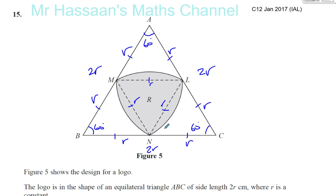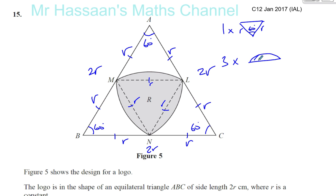We're going to find the area of this shaded part. We have one inner equilateral triangle LMN with sides R and angles 60 degrees, and we have three circular segments. The segments are portions of a circle whose radius is R and whose angle is 60 degrees. We find the area of the triangle and the area of the three segments, then add them together.